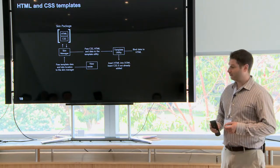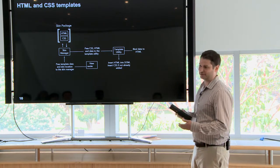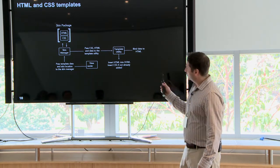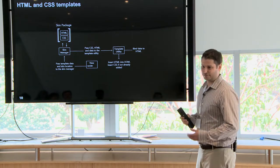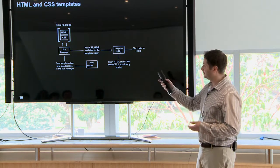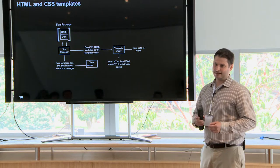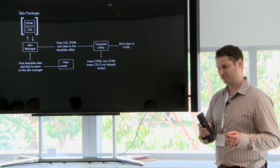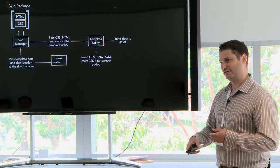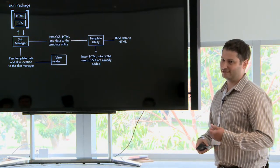The templating structure worked as follows: the view object — say a VOD movie — when it makes its call to render, it calls the skin manager, passing template data for what's supposed to appear in the view and information about its skin. The skin manager retrieves a package — a snippet of HTML and a bit of CSS. It takes that data and that HTML package and passes it to a template utility, which binds the data to the HTML and then inserts it into the DOM. It also checks whether that CSS style is already applied into the DOM — if it is, just ignore it.